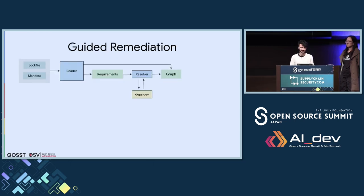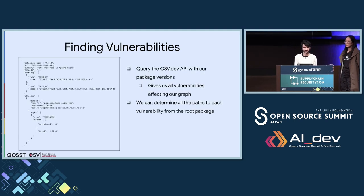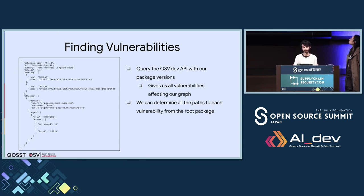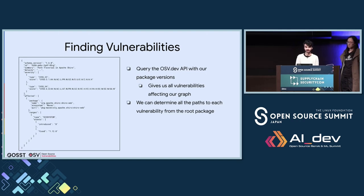Now we can start looking at the vulnerabilities themselves. This is straightforward with the OSV API — we query it with our packages and versions and get back all OSV records that affect us in a machine-readable format. OSV records include useful information such as affected version ranges, CVSS scores, and a human-readable description of the vulnerability. With these vulnerabilities and the dependency graph, we can find all paths to vulnerabilities in our project when it comes time to remediate.